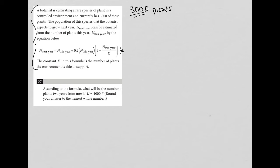The constant K in this formula is the number of plants the environment is able to support. Okay, so that's good to know. All right, so the question actually says, according to the formula, what will be the number of plants two years from now?